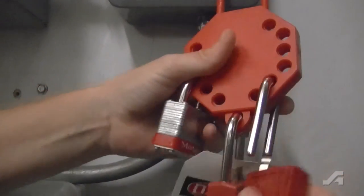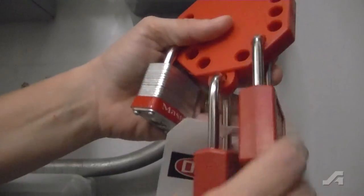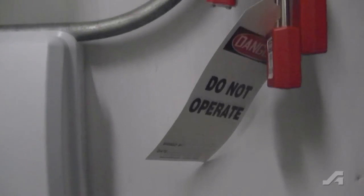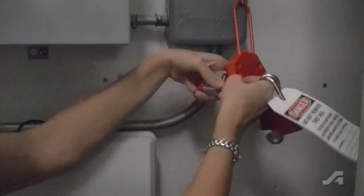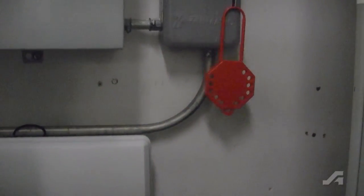The stop out group lock hasp secures with up to 12 padlocks sold separately, and it hangs by the one and one quarter inch by three and one half inch closed oval loop.